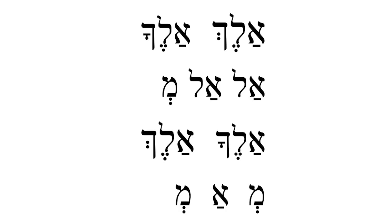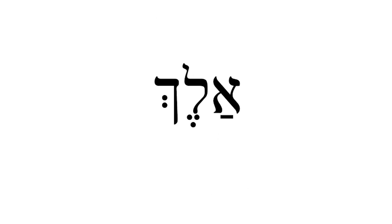I'm going to teach you one word by rote. This word says 'alech' and it's read from right to left. Alech. Can everyone say 'alech'? Alech. Excellent.